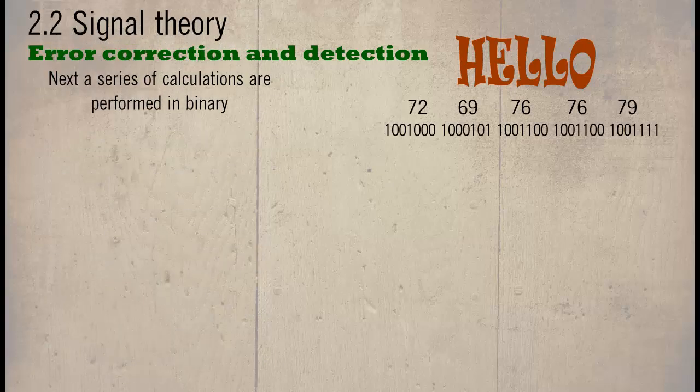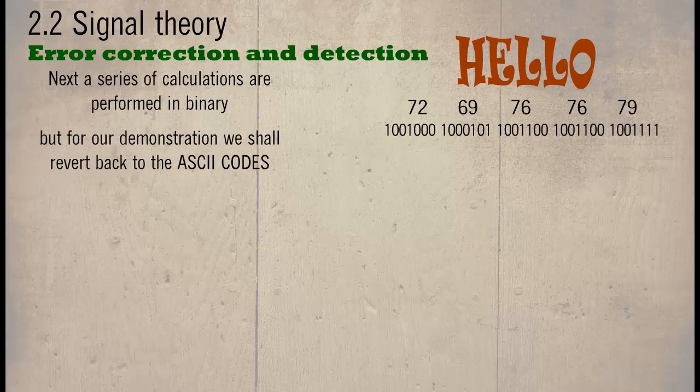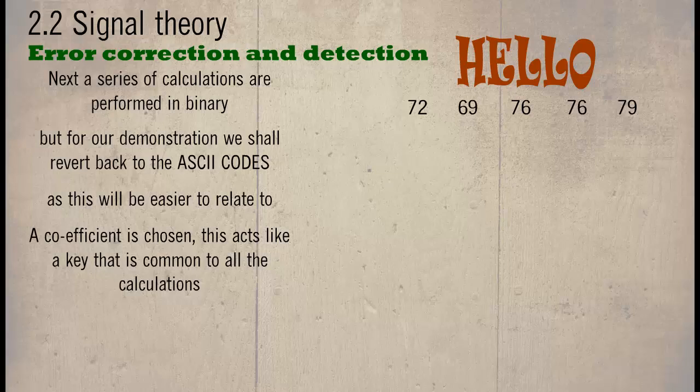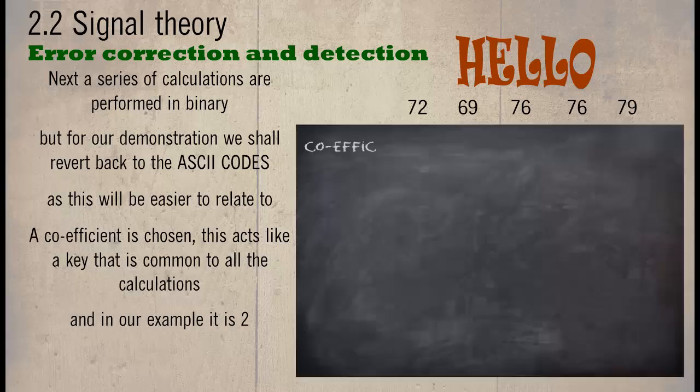Next, a series of calculations are performed in binary. But for our demonstration, we shall revert them back to the ASCII codes, as this will be easier to relate to. Now a coefficient is chosen. This acts like a key that is common to all the calculations. In our example, it is 2.